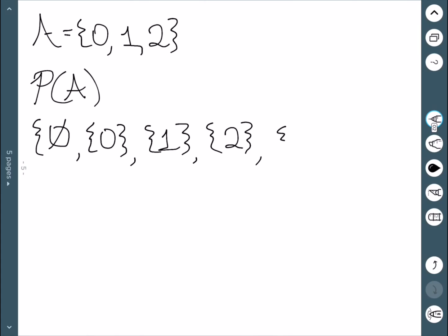Now we'll think of two elements. I could have 0, 1. I could have also taken 0, 2, or 1, 2. And these are all the possible combinations of two elements.